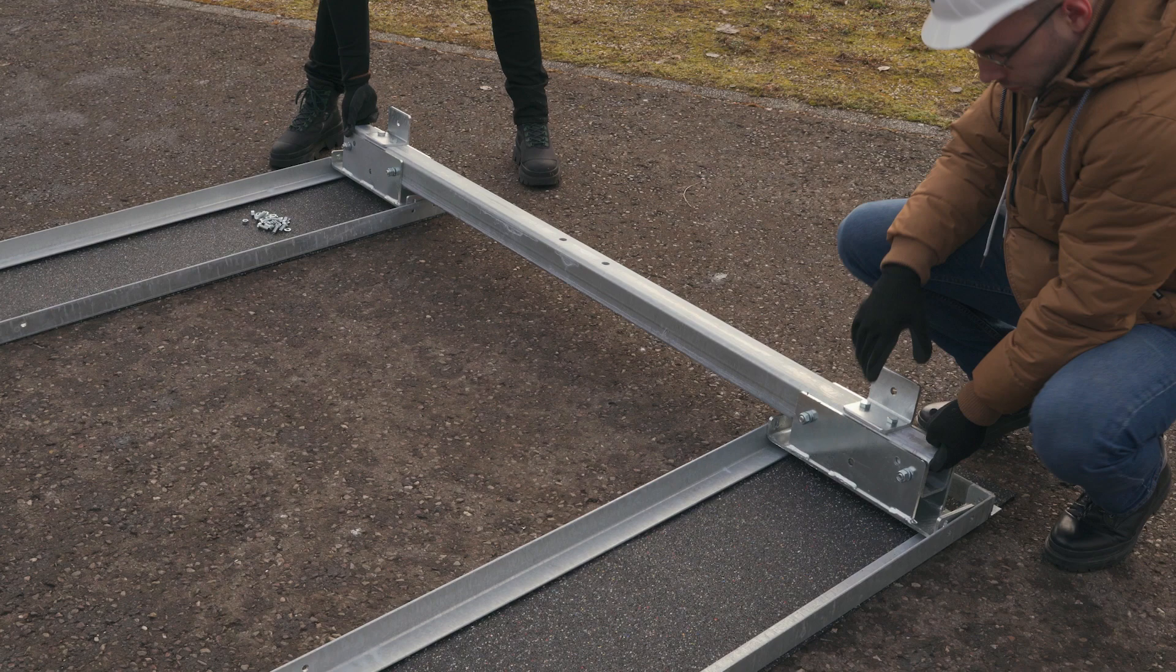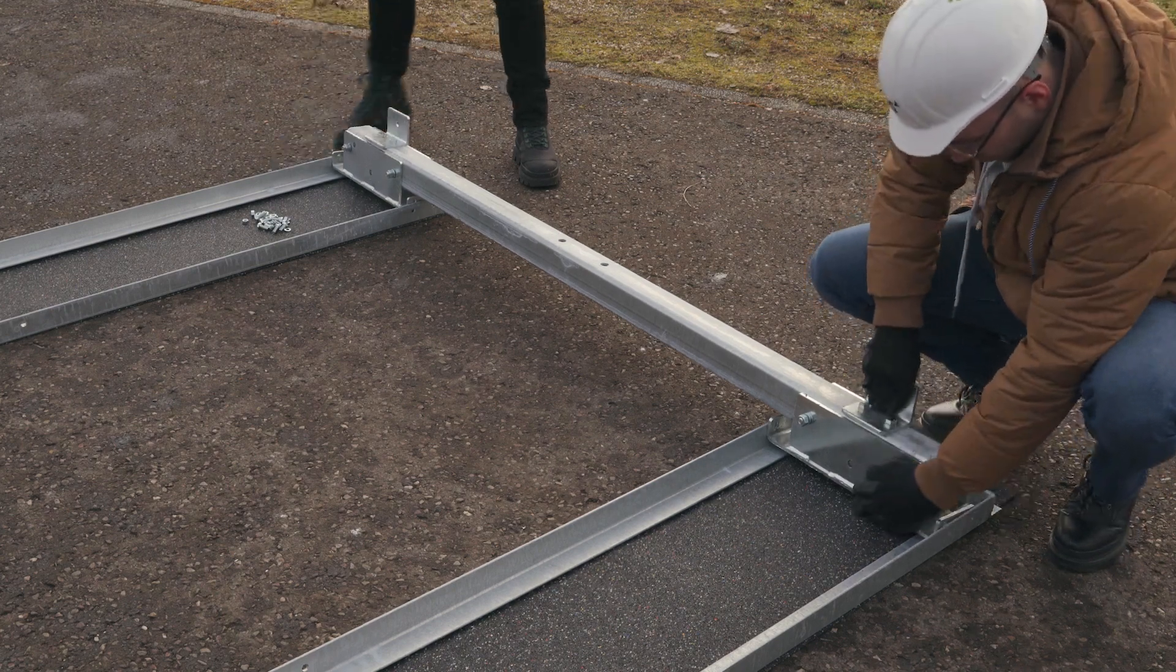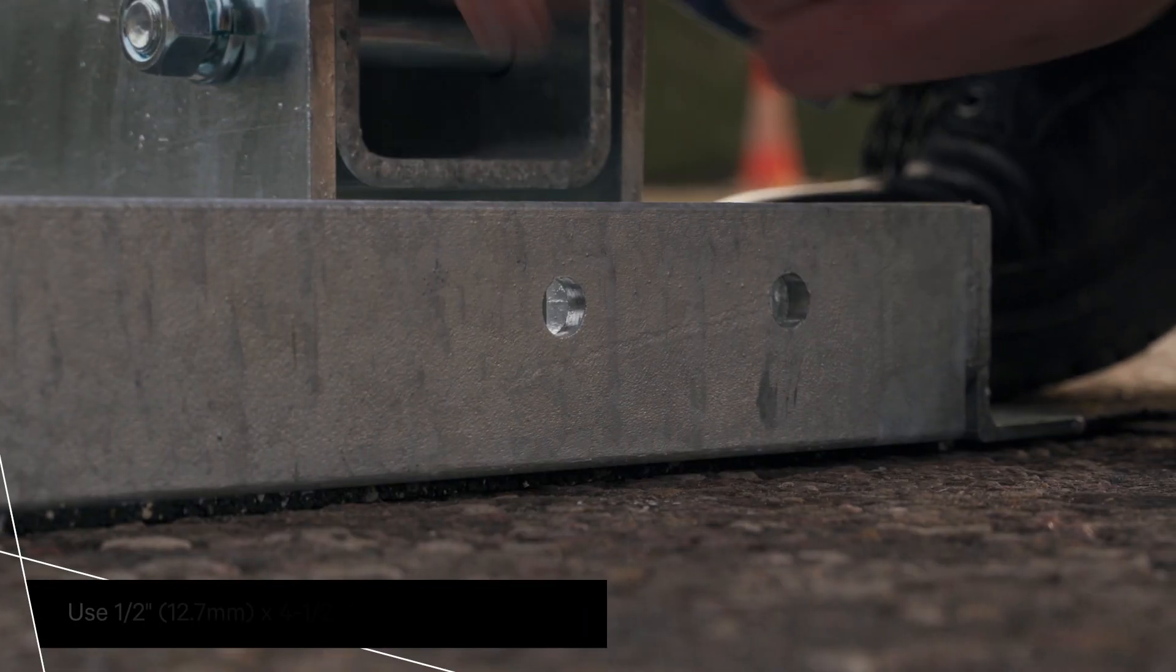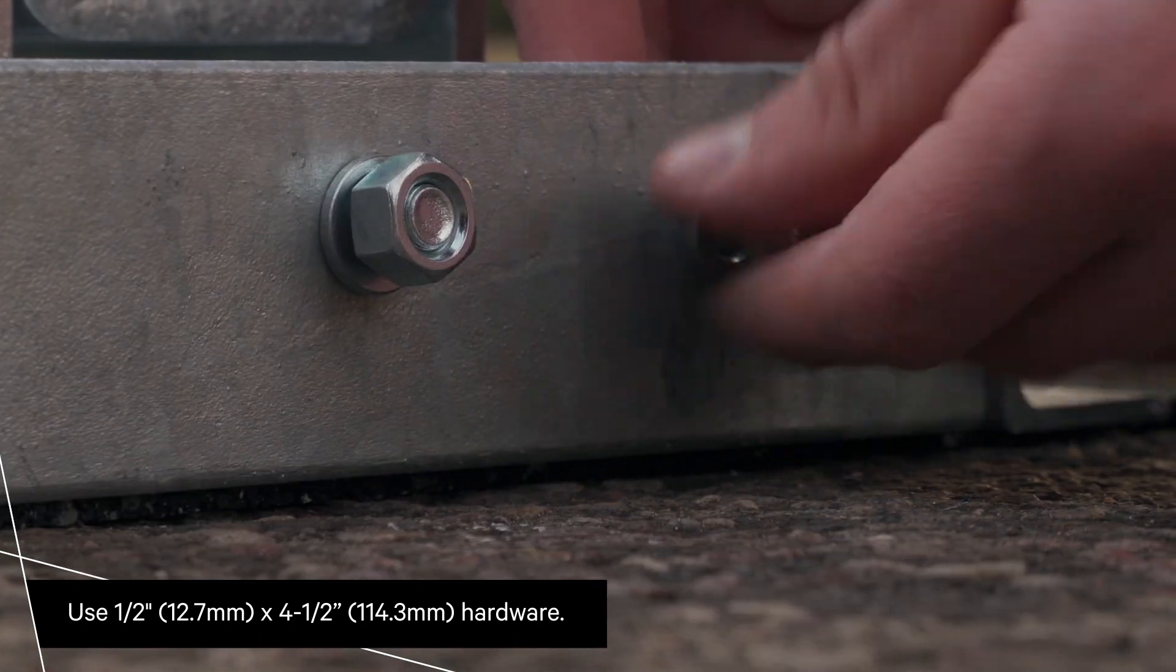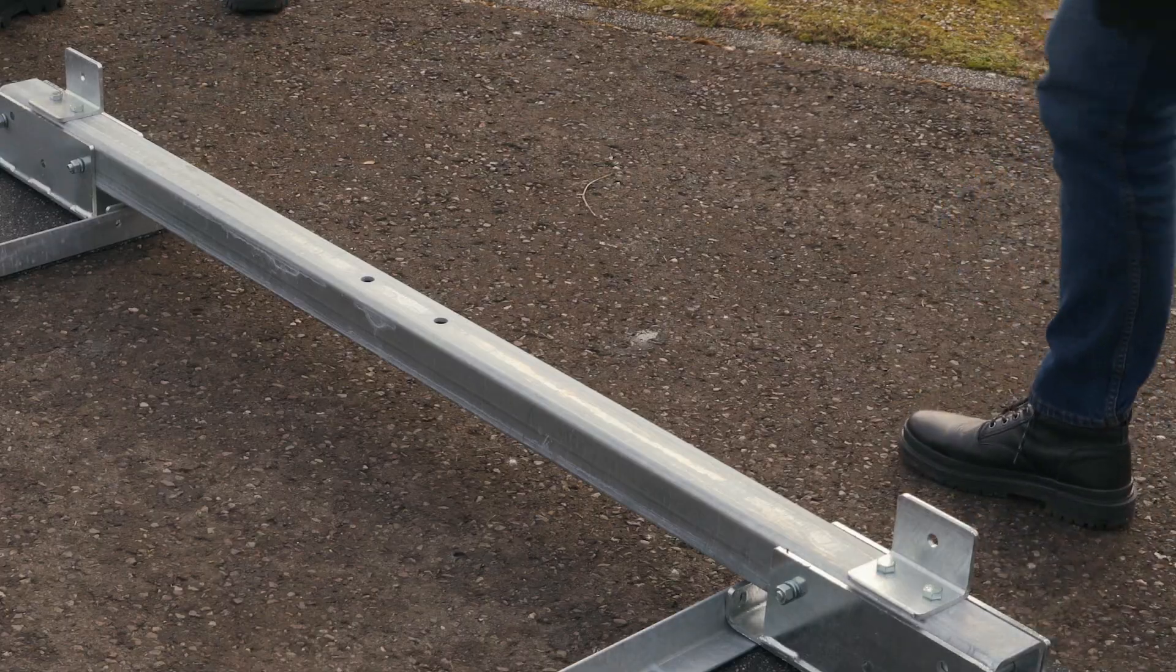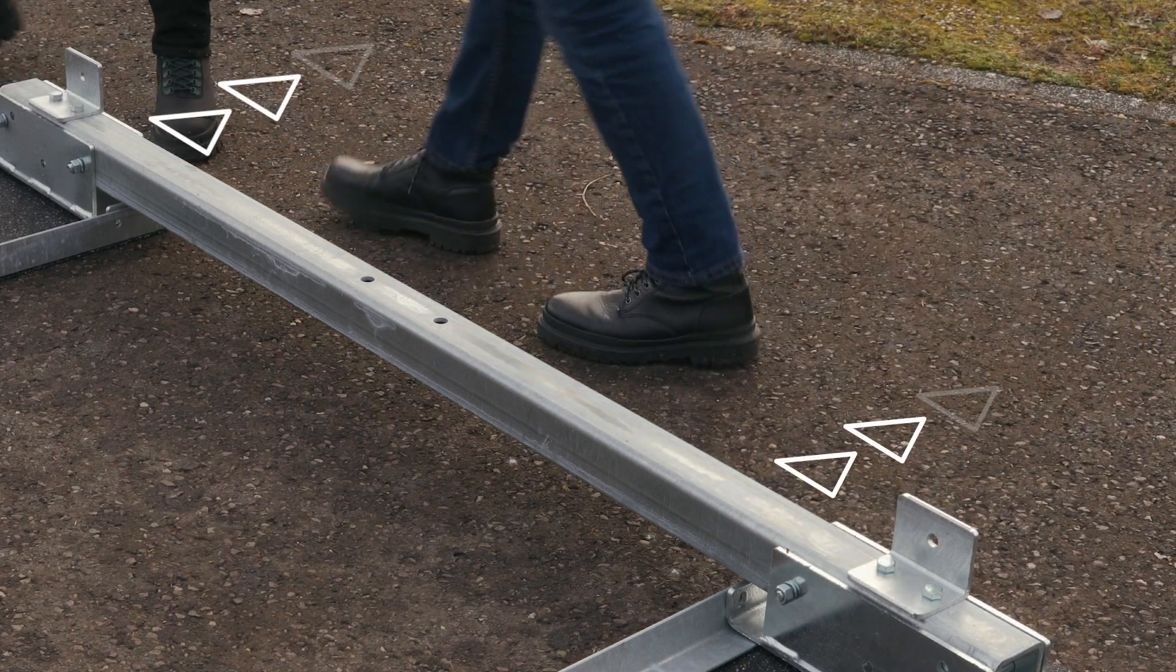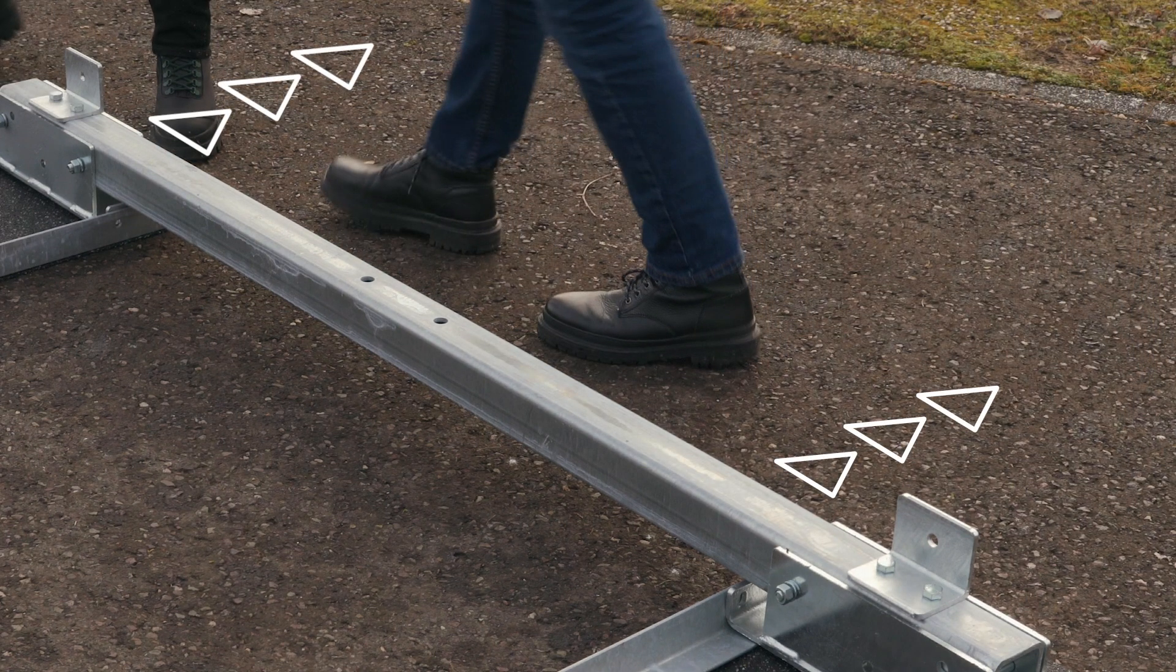Place two lower arm assemblies into the ballast trays. Secure each assembly to the tray. Ensure the brace mounting tabs previously installed should be towards the outside of the frame.